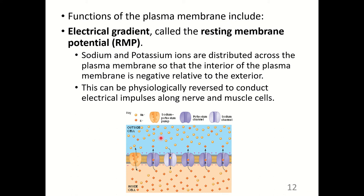In this illustration, the round ions are sodium ions and the diamond-shaped ions are potassium. There will be more sodium on the outside of the cell and more potassium on the inside. There are many transport proteins that allow for leakage of potassium out of the cell, and a sodium-potassium pump that pumps sodium out of the cell. With this constant outflow of positively charged ions, we end up with a negative interior charge.